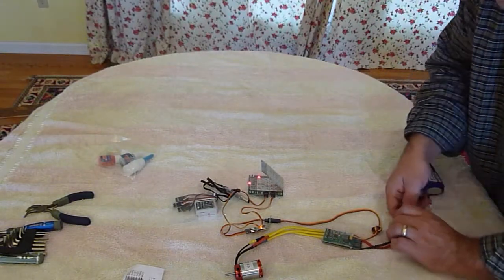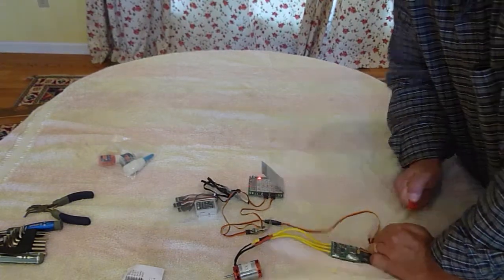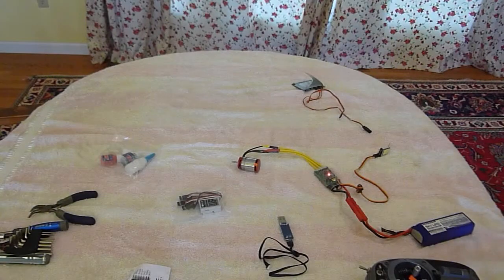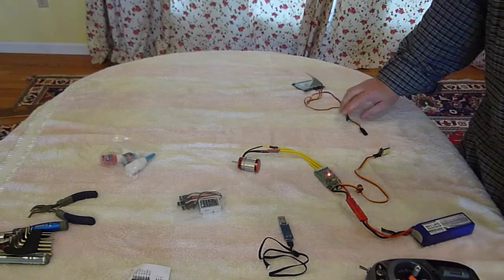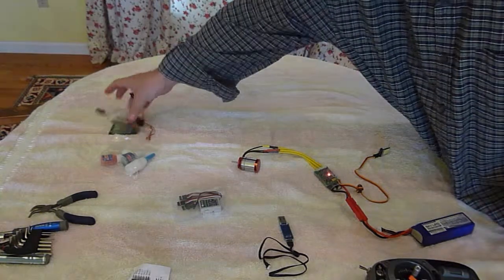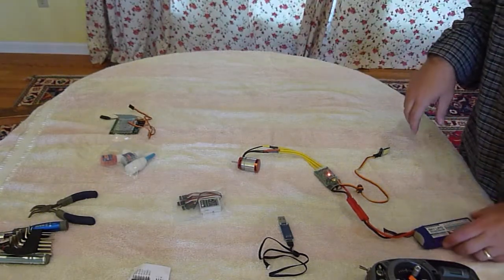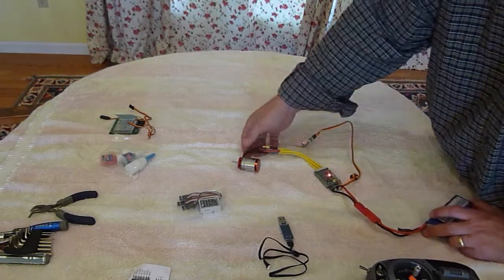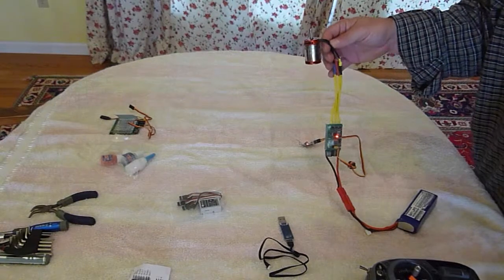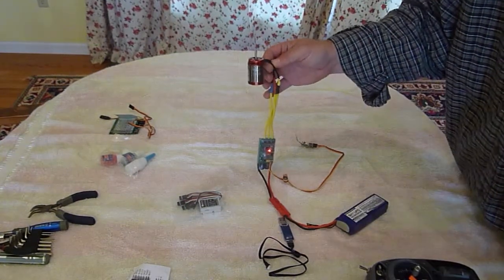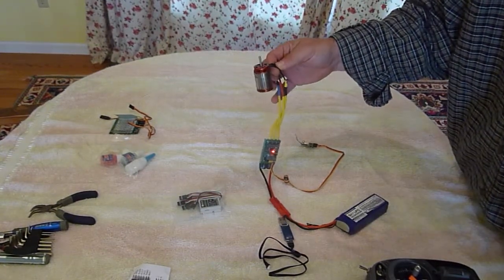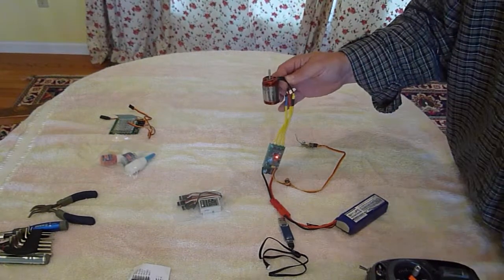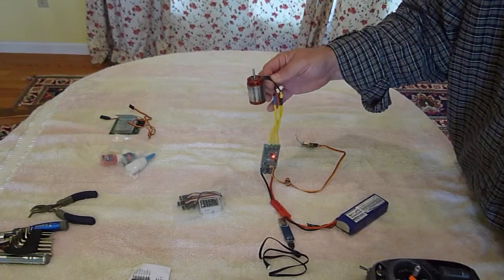So everything is set. So I'm going to disconnect the battery. Okay, I've removed the programmer out of the setup here. So now I've just got my battery, receiver, speed controller, and motor. And this, I'll show you why I like these speed controllers and programming it with the programming card there.